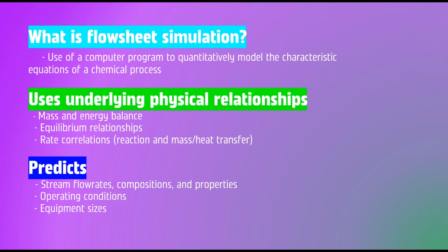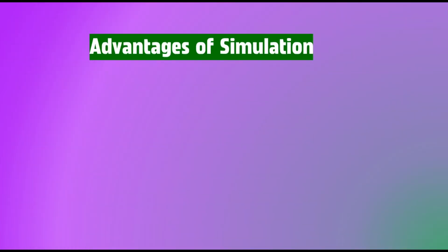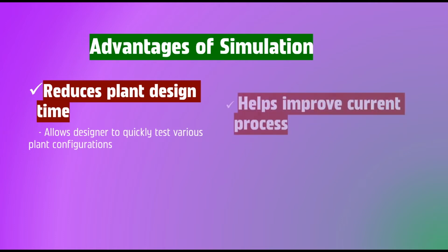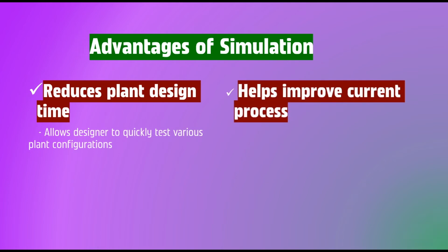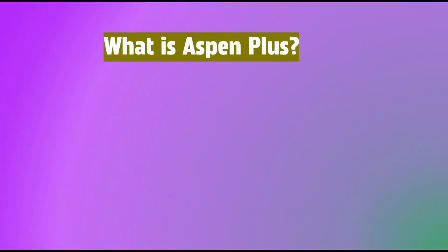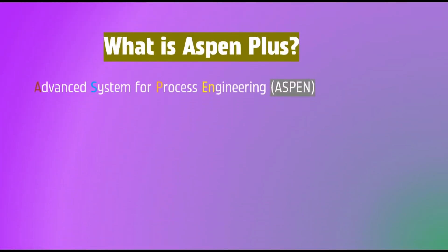And rate correlations. With Aspen Plus, you can predict stream flow rates, composition, and properties, as well as operating conditions and equipment sizes. Continuing with advantages of simulation: number one, it reduces plant design time — it allows the designer to quickly test various plant configurations. Number two, it helps improve current processes, answers what-if questions, and determines optimal process conditions within given constraints.